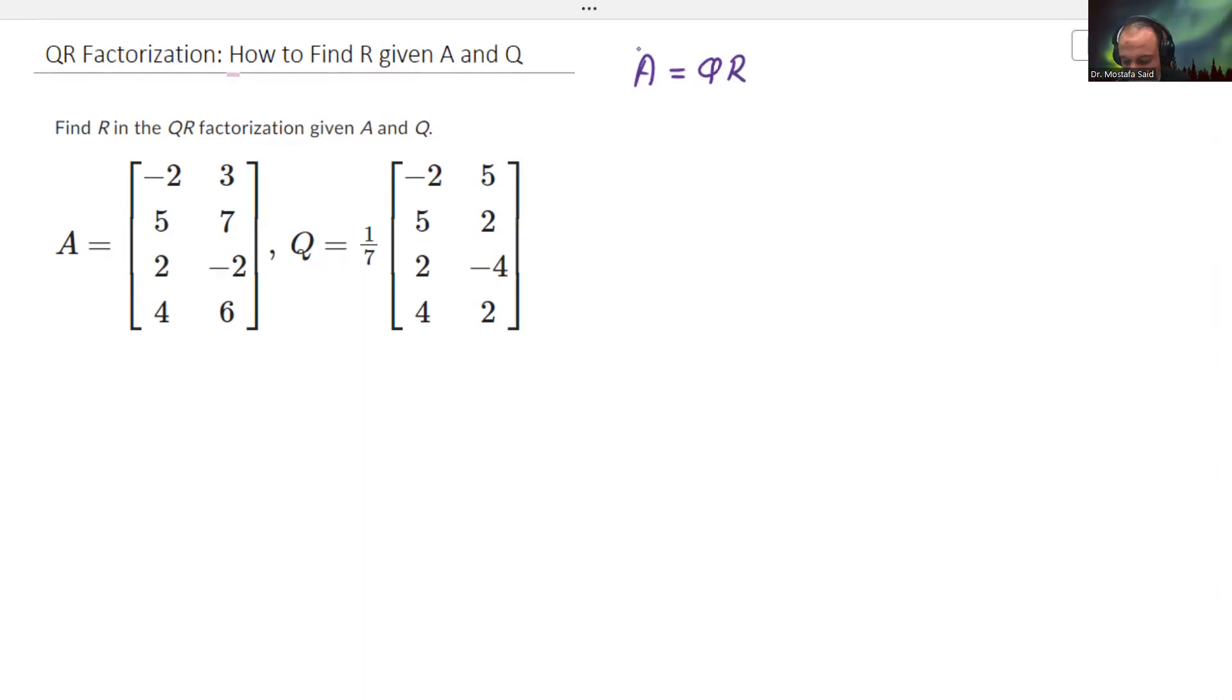So we know that some matrices, for example A, can be factored as a multiplication of two other matrices that we call Q and R, just like when you have a number like 6, 6 can be written as 2 times 3. That's it, but we do that for matrices. The matrix Q and matrix R have certain properties, and based on these properties we're going to solve that particular question.